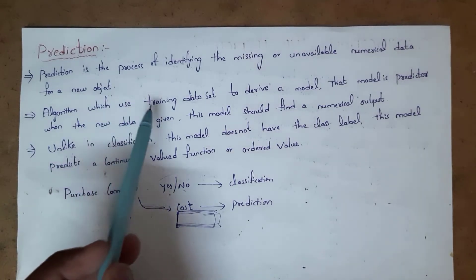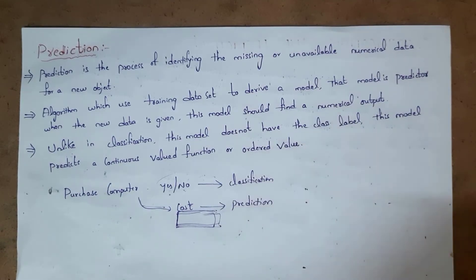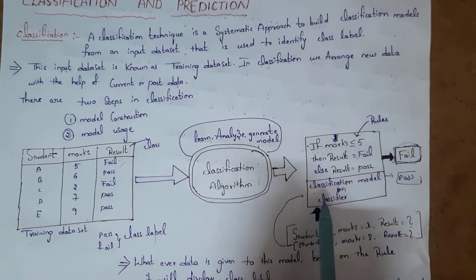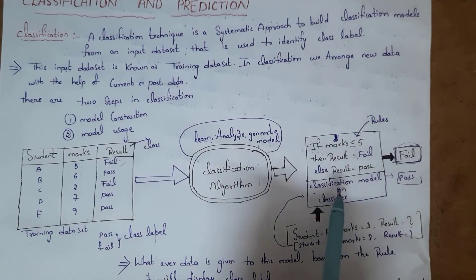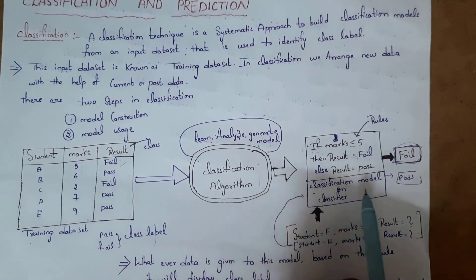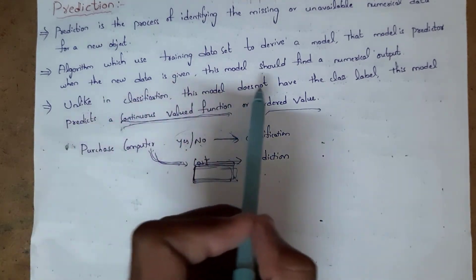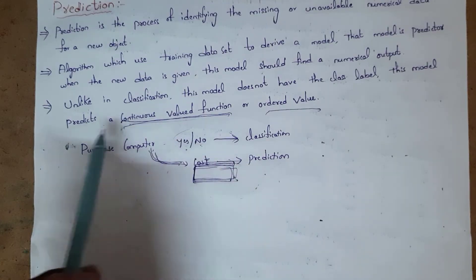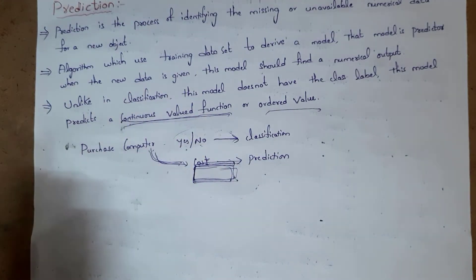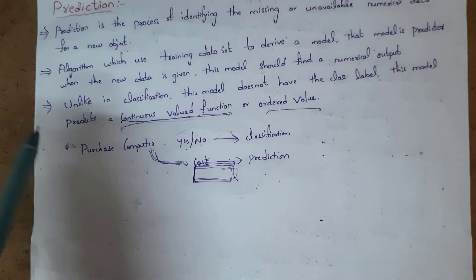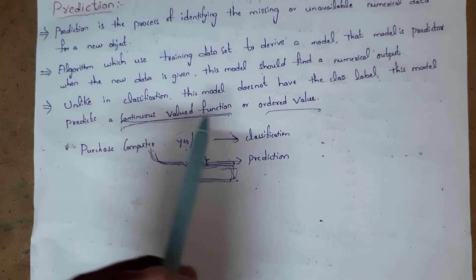An algorithm which uses a training data set to derive a model is called a predictor. In classification, the model created from the input data set is called a classification model or classifier, but in prediction we call this model a predictor because it is predicting the value. Whatever new data is given to this predictor, it finds a numeric output. Unlike classification which has class labels like yes/no or true/false, prediction does not contain any class label — this model predicts a continuous valued function or ordered value.